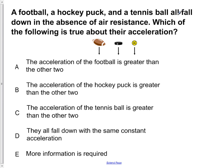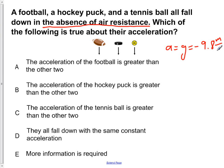The problem specifies that it is in the absence of air resistance, so there is no air resistance acting on either of these objects. We know that any object above the surface of the earth will accelerate down with an acceleration equal to -9.8 meters per second squared. So the football will experience an acceleration due to gravity of g, the hockey puck will experience an acceleration due to gravity of g, as well as the tennis ball. In turn, all three of these are accelerating down with the same constant acceleration.